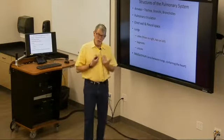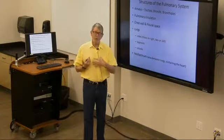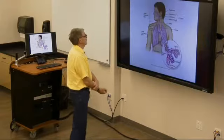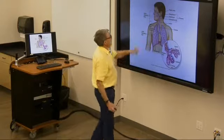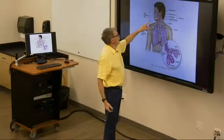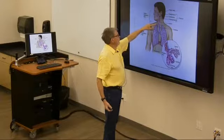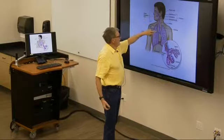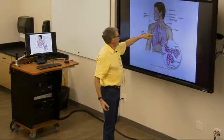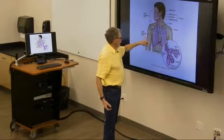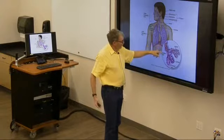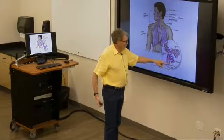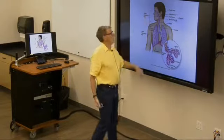The mediastinum is the area between the lungs where the heart sits inside its pericardial sac. Here we have the nasal passages, the pharynx, the larynx, oral cavity, trachea, the bronchi, smaller and smaller bronchi, bronchioles, alveoli — deoxygenated blood coming in, oxygenated blood going back out. This is all review from Anatomy and Physiology 2.